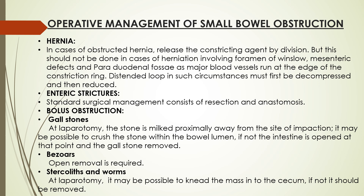I have briefly described the operative management of small bowel obstructions. In cases of obstructed hernia, the constricting agent is divided, but this should not be done in cases of hernias involving the foramen of Winslow and peritoneal fossa, as the major vessels run at the edge of the constricting ring. In cases of gallstones, enterotomy is done, and bezoars are removed by open procedures. In cases of ascaris and worms, these are removed with the help of enterotomy, and sometimes it may also be possible to milk the mass into the cecum.